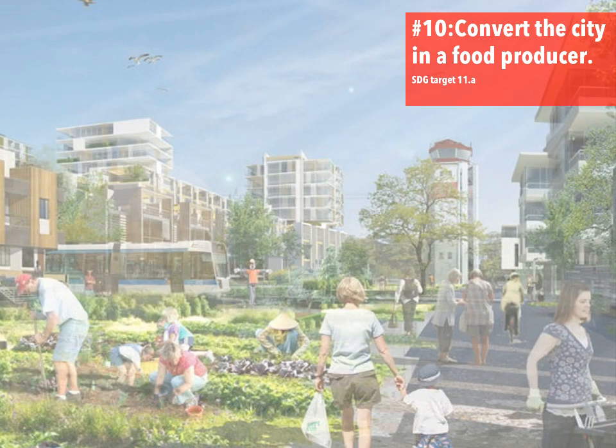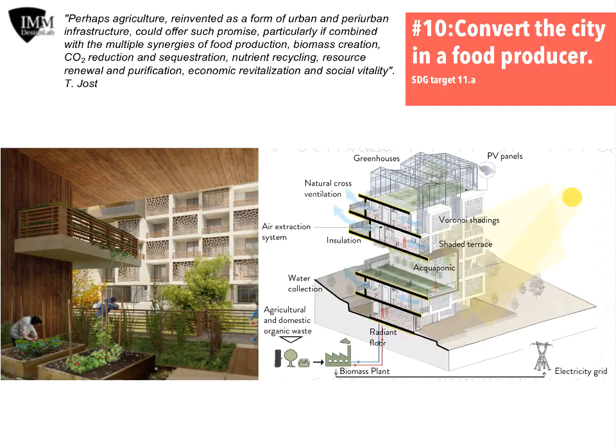DOP No. 10, Convert the City in a Food Producer, is correlated with UN's SDG target 11a. Hence, the main aim of this ordering principle is to address the goal of providing more land towards urban and peri-urban agriculture implementation use.